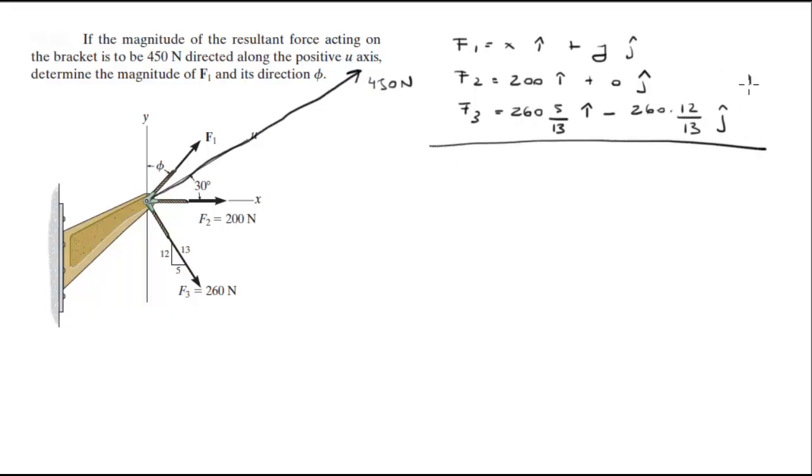So when you add them all up, you're going to get F of r, which is equal to 450 cosine of 30 in the i-direction plus 450 sine of 30 in the j-direction. Now this is equal to 389.7 in the i-direction plus 225 in the j-direction. This is the resultant force.